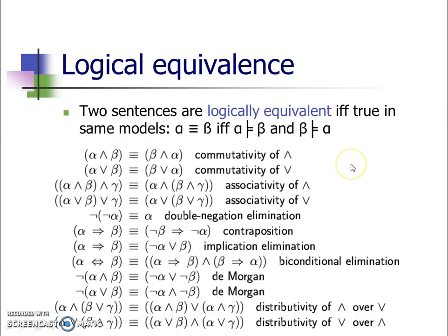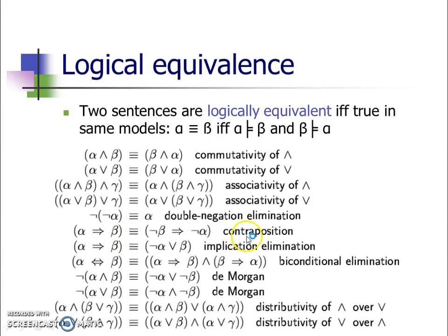There are some more properties with which statements may be equivalent. These include the commutative property over AND, the commutative property over OR, the associative property over AND, and the associative property over OR. Also, two negations cancel each other and we get a positive literal. There is one more very important law called the law of contrapositive: when alpha implies beta, it is equivalent to negation of beta implies negation of alpha.